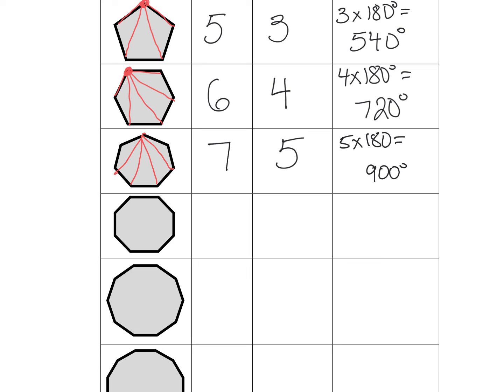For our octagon, we have eight sides or six triangles, which ends up six times 180 or 1,080.